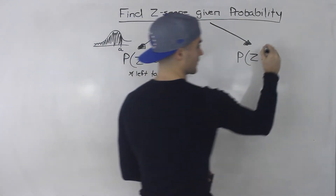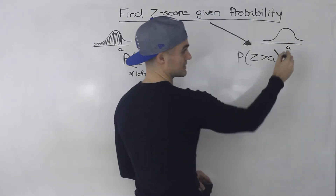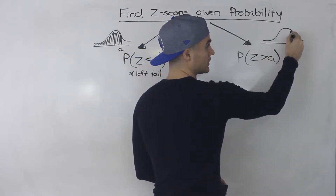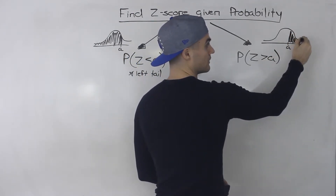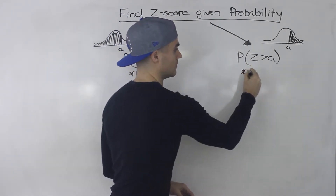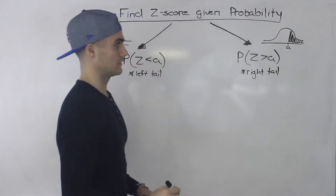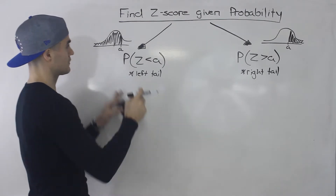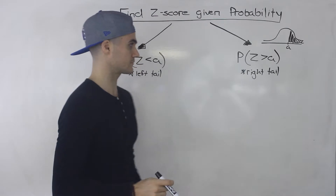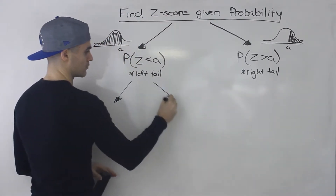In the second case, we're finding an A value — a Z-score — given the probability or area to the right of it, meaning the probability that Z is greater than A. So we could be given the right tail. So we can either be given a probability to the left of A or to the right of A, and we can break this down further.